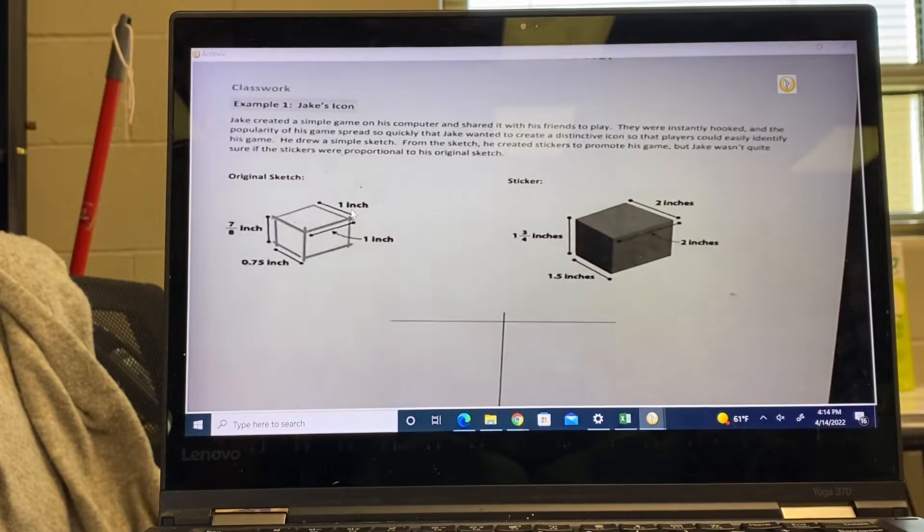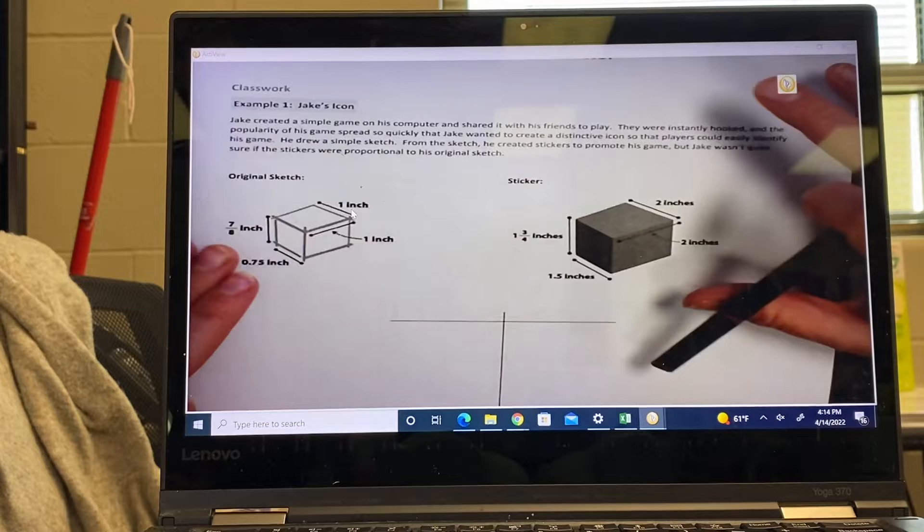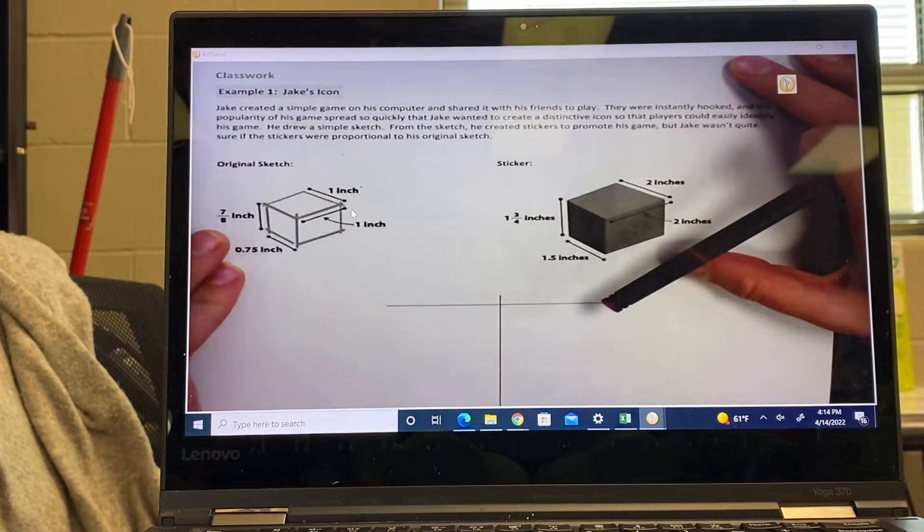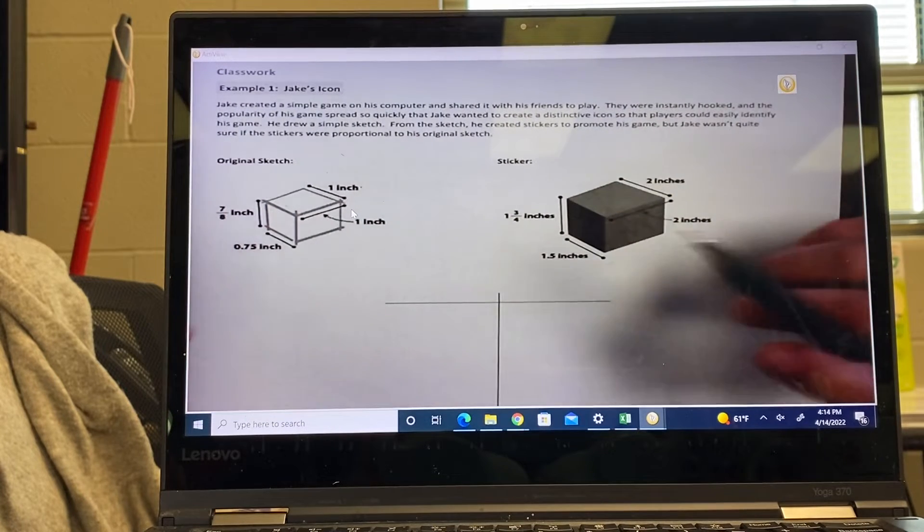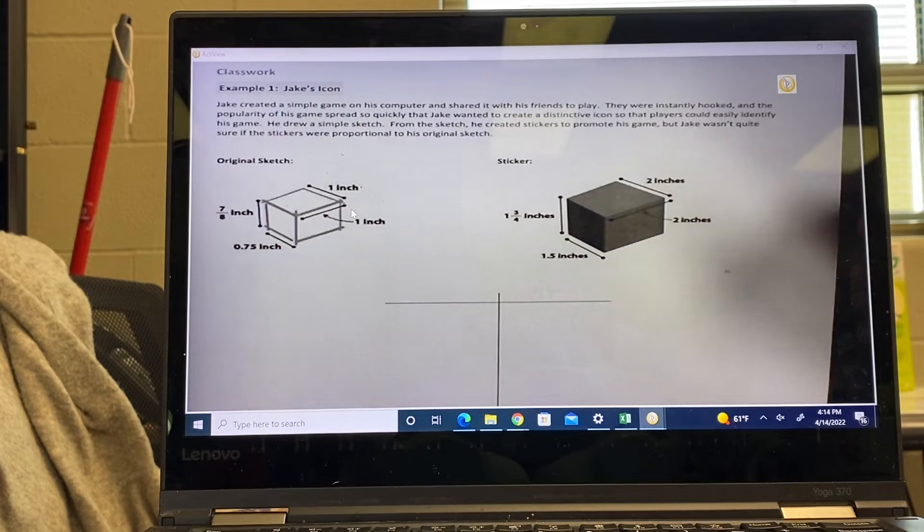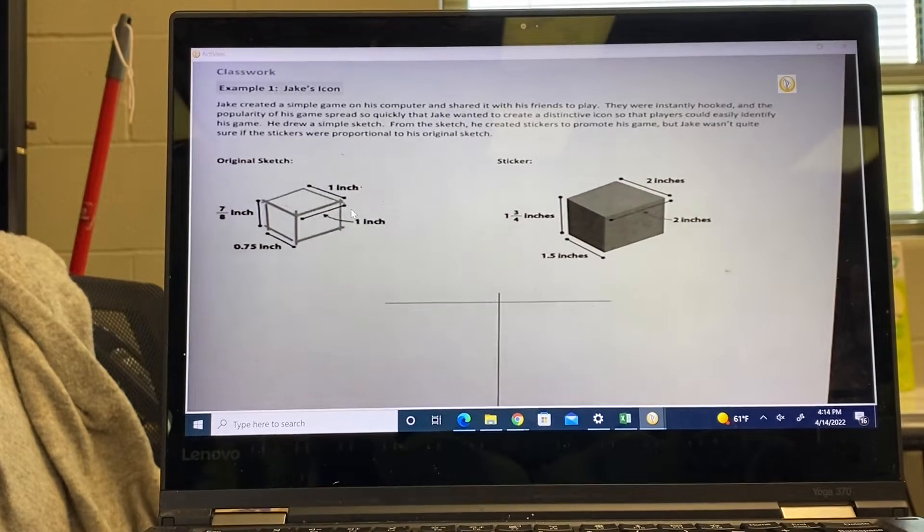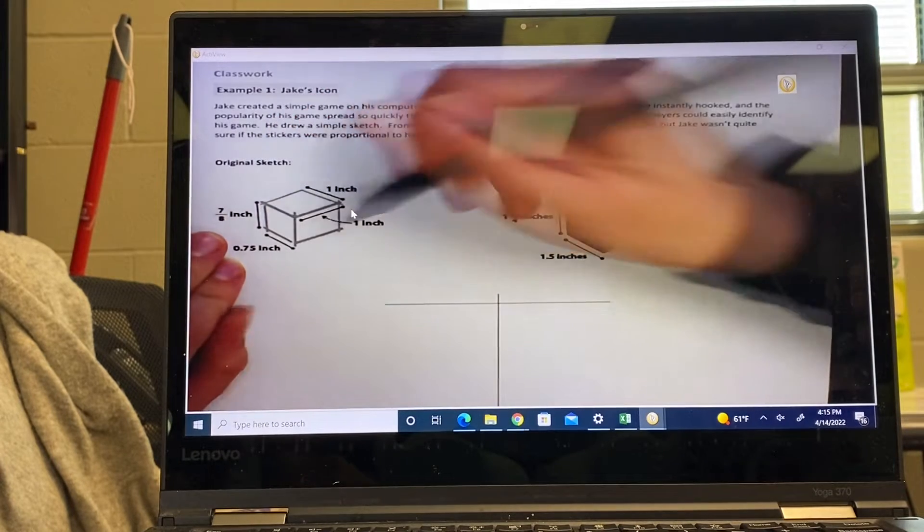Okay guys, so for lesson 17 all we're doing is the same thing we did with lesson 16, except with 3D shapes. So on here we're going to take this icon that we have here and we're going to match up the dimensions on here and we're going to see if it's constant.